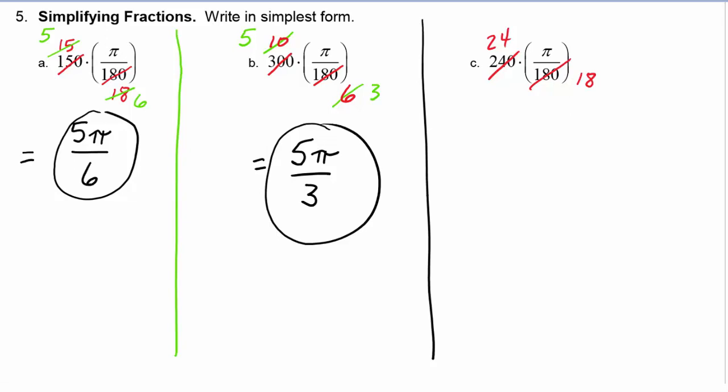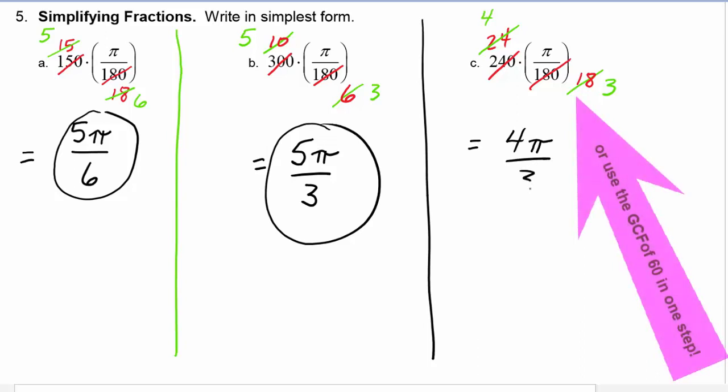Now you can see the GCF of these two is six. Six goes into 24 four times. Six goes into 18 three times. So this fraction reduces to four pi over three.